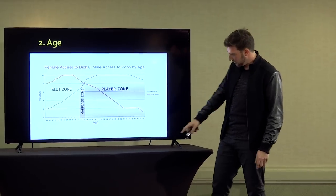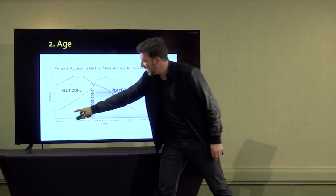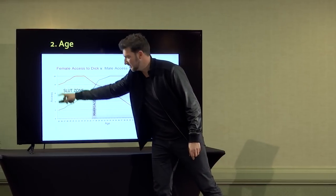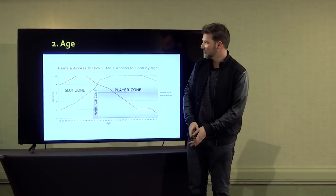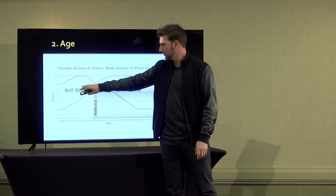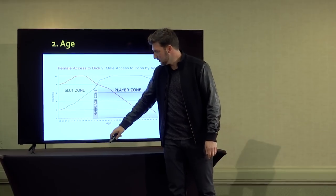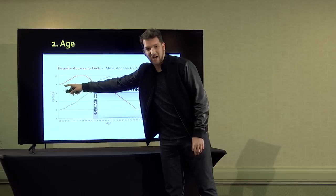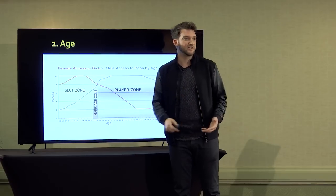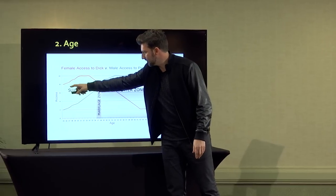I'm not the biggest fan about how kind of surface level this graph is, but it illustrates a good point. On the x-axis you have age, goes from 15 to 49. On the y-axis you have access, 10 being highest access, 0 being lowest. For women what you see, they call it the slut zone because they have the most access to dick during this age. Starting at 15, she's already pretty high. She's developed, she's looking like a woman already. Guys are attracted to her.